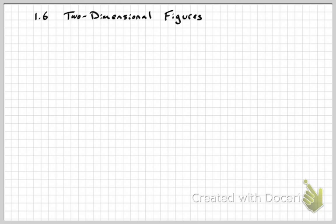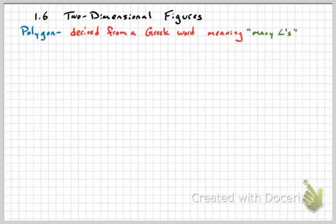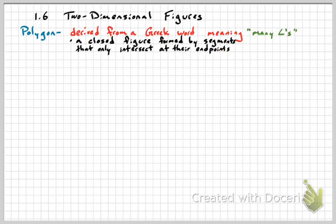To understand two-dimensional figures we first need to know what a polygon is. The term polygon comes from the Greek word meaning 'many angles.' Polygons are comprised of straight-line segments that, when connected, create angles. A polygon is a closed figure formed by segments that only intersect at their endpoints.